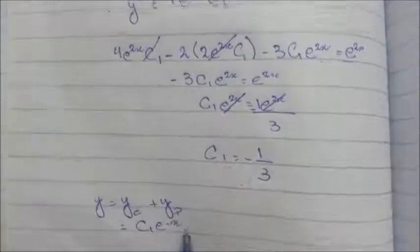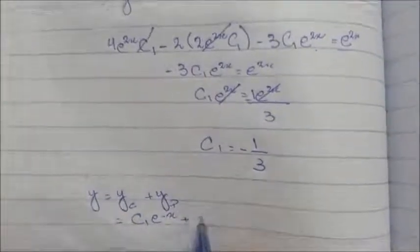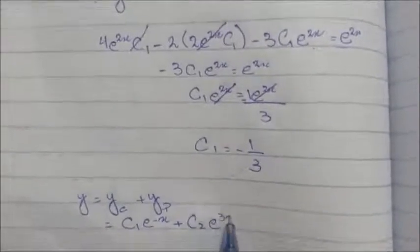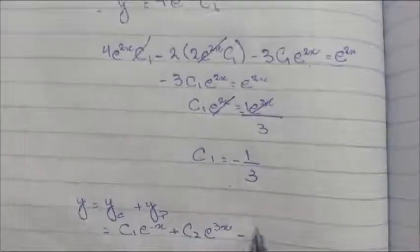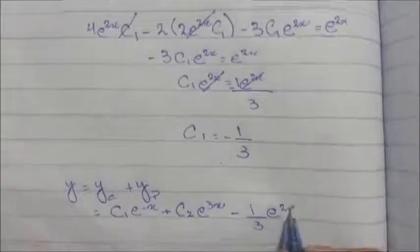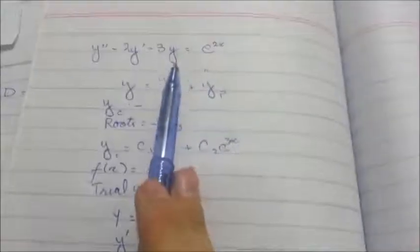So the answer is always yc plus yp. So yc will be c1e^(-x) + c2e^(3x) - (1/3)e^(2x). This is the answer of this differential equation with undetermined coefficient method.